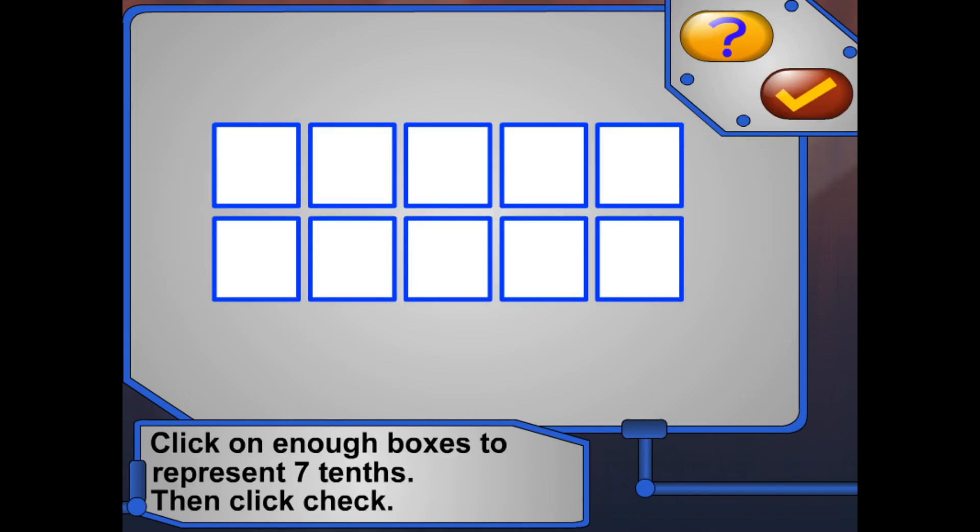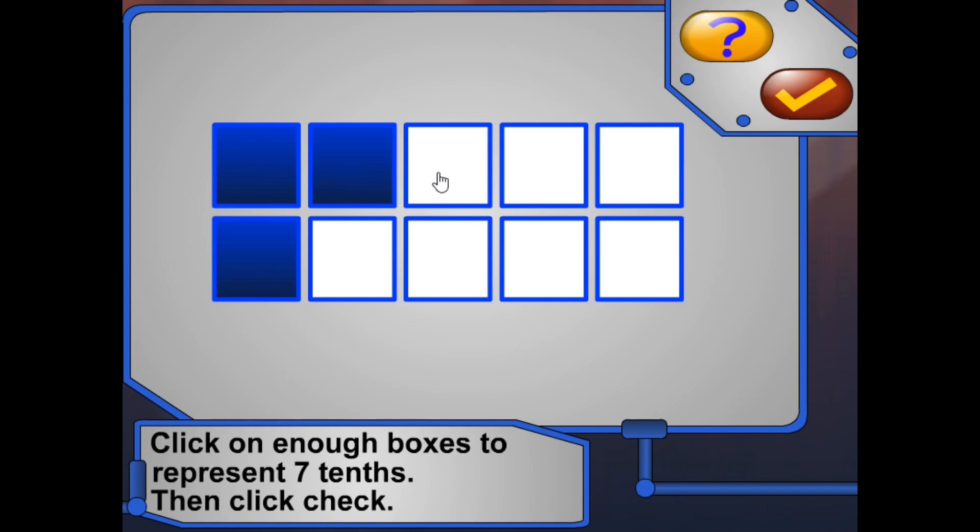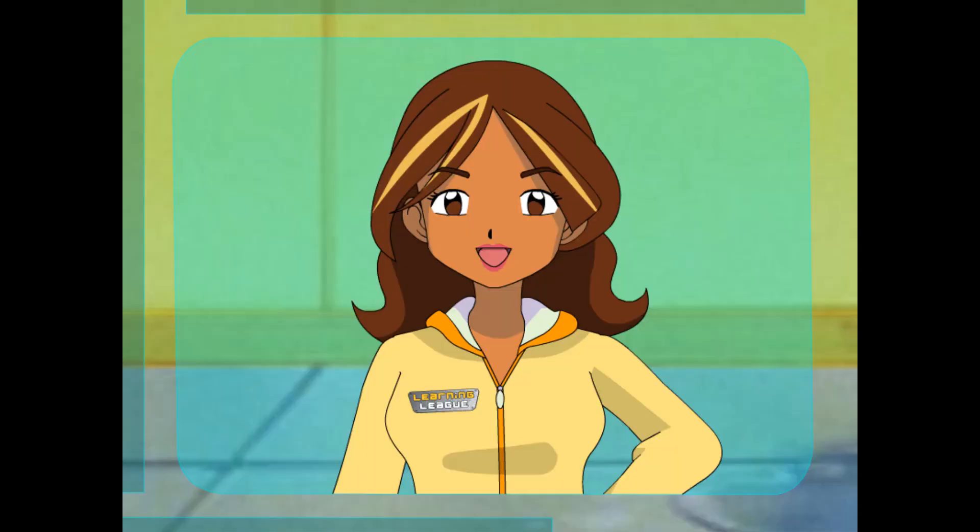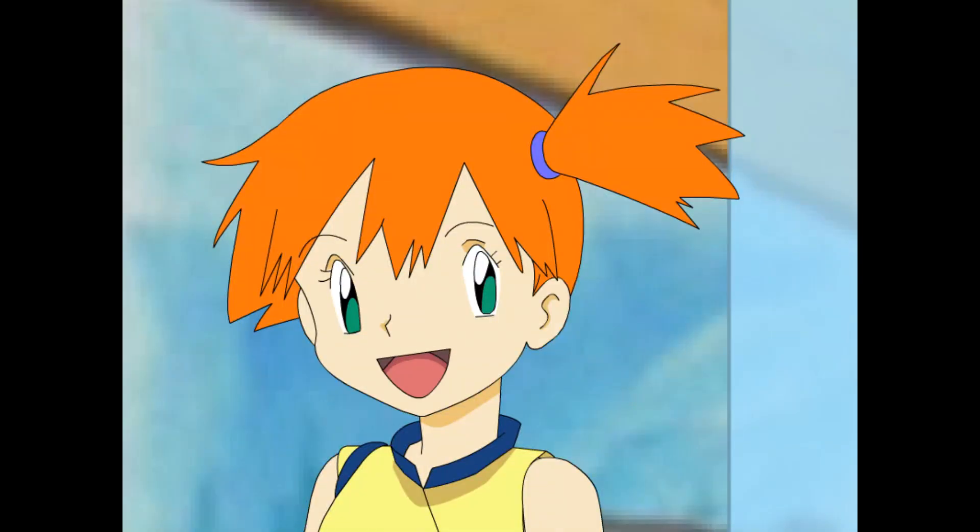Now click on enough boxes to represent seven-tenths, then hit the check button. You got it! You're good! You've got great decimal skills! Yeah! I think I'm ready to adjust the water level of the tank!